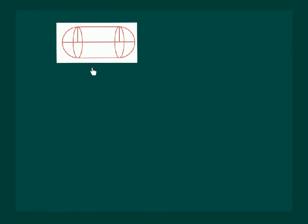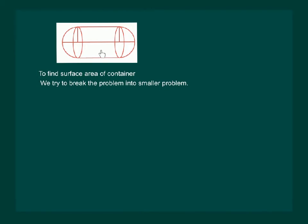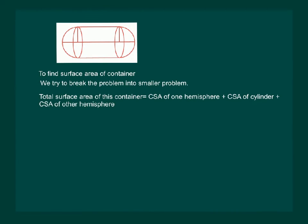Say the following is the shape of some container — how do we find the surface area of such a solid? We try to break this problem into smaller problems. We can see that this solid is made up of a cylinder in the center with two hemispheres stuck at either sides. So the total surface area of this container is equal to the sum of the curved surface areas of each of the individual parts: curved surface area of one hemisphere plus curved surface area of the cylinder plus curved surface area of the other hemisphere.